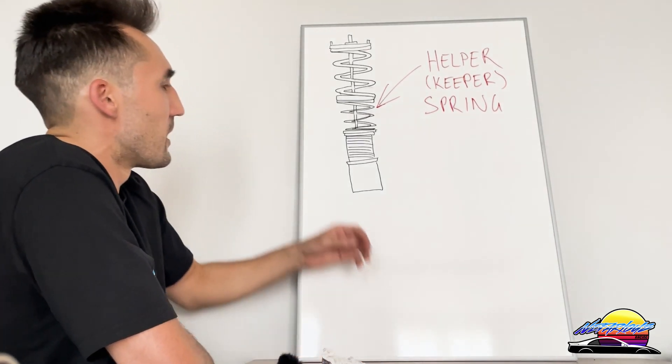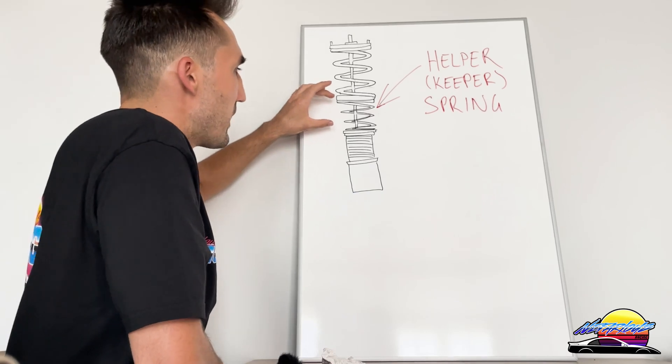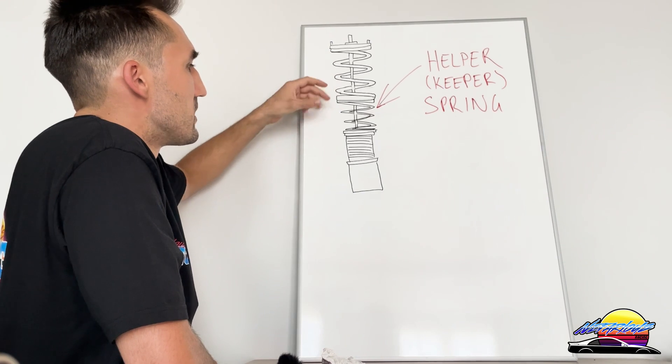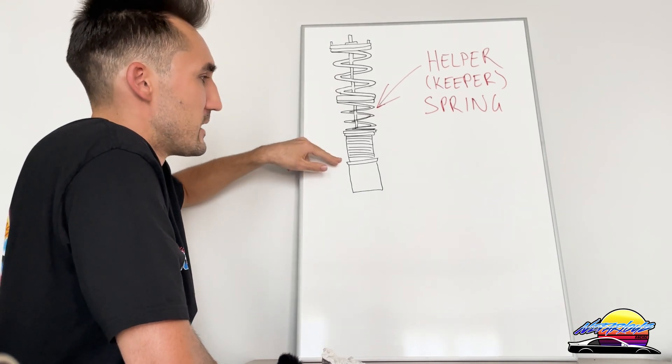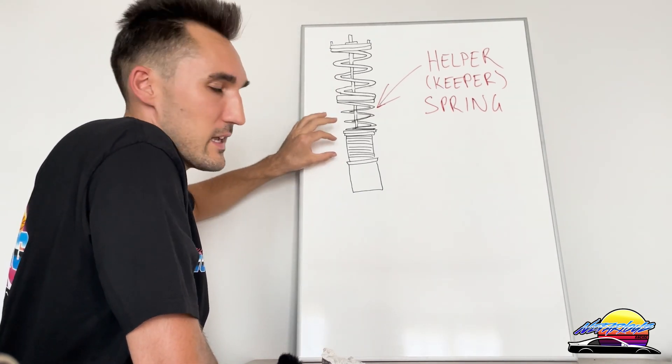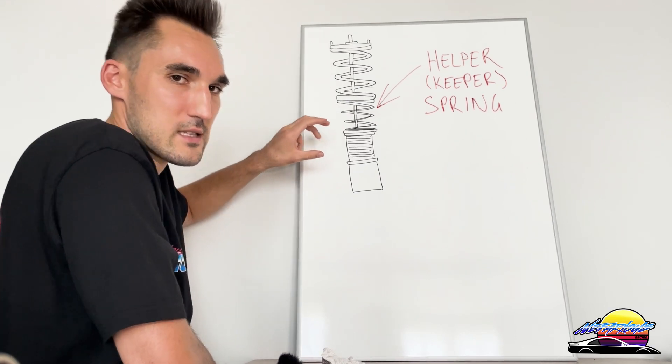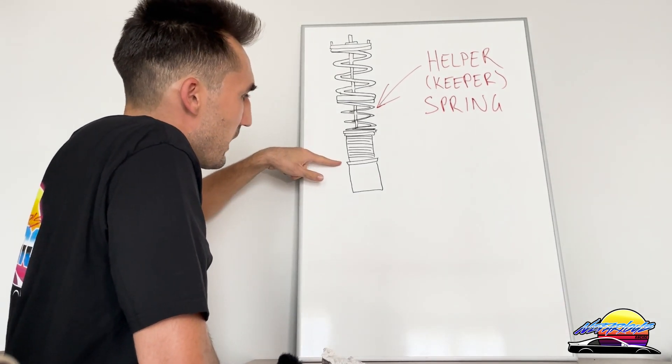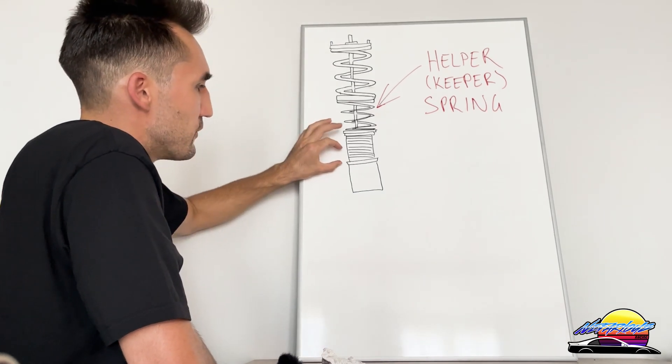What some people do is when they want to go lower, they'll actually remove this helper spring. They'll wind the spring perch all the way down to the bottom, and then if that's still not low enough—this is usually the stance-type people that do it—but basically they'll lower it all the way down to the bottom, and then if it's still not low enough, you've still got this compressed chunk of metal here, which will give you another like 20 to 30 millimeters sometimes.